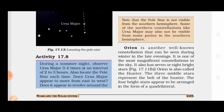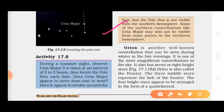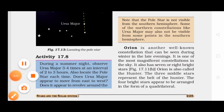The pole star is not visible from the southern hemisphere. Some northern constellations like Ursa Major may also not be visible from some points of the southern hemisphere.